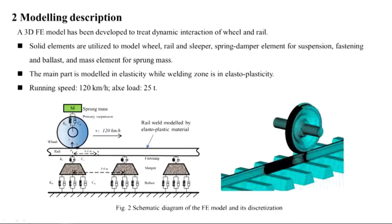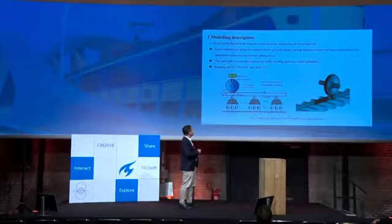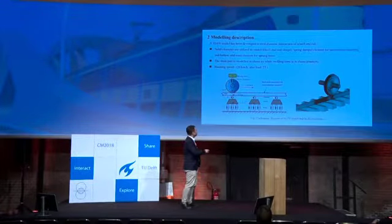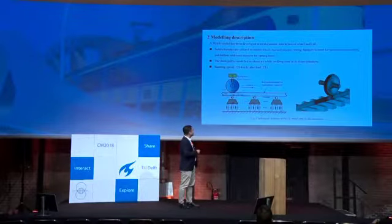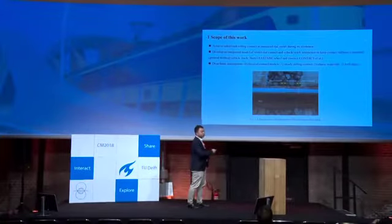For material modeling, the whole part is modeled in elasticity, except for the welding joint, which is modeled with plasticity. The frictional contact between the wheel and the rail is solved by a so-called penalty method, in which the global dynamics and the local contacts share the same contact model, keeping the contact stiffness consistent.